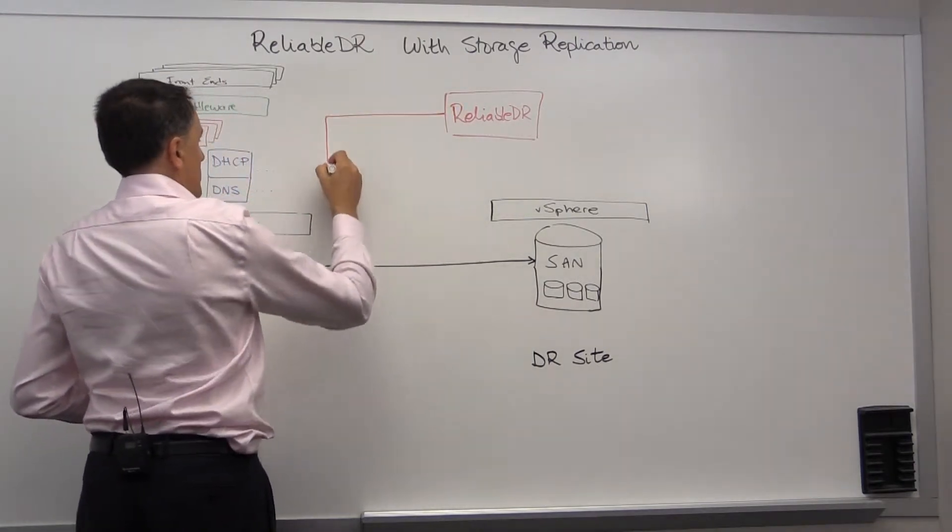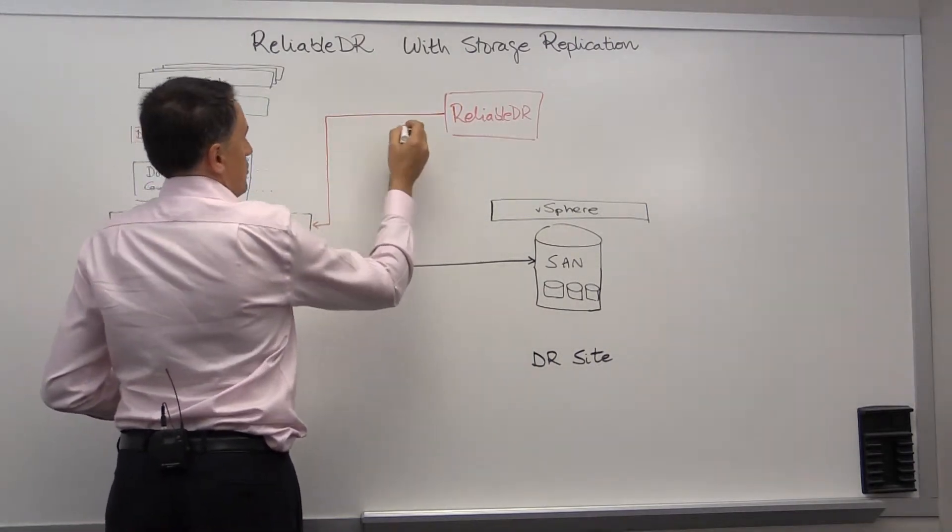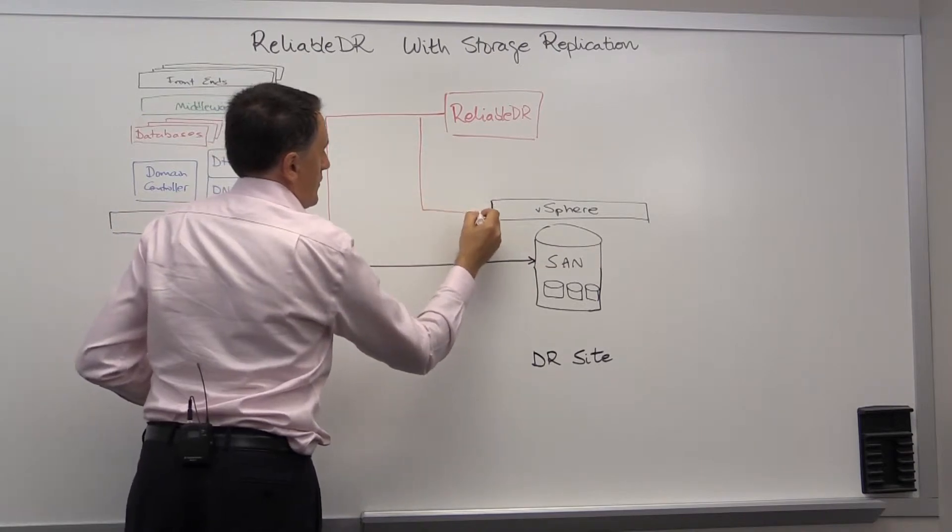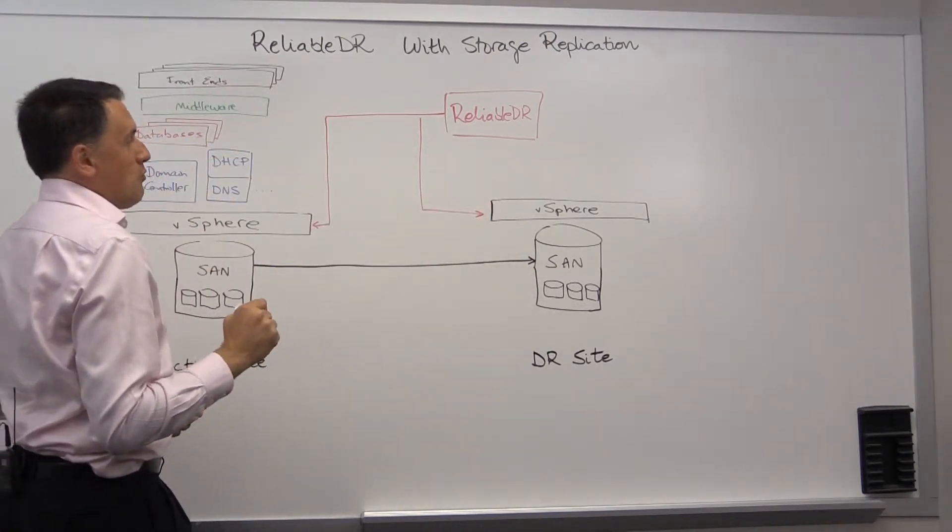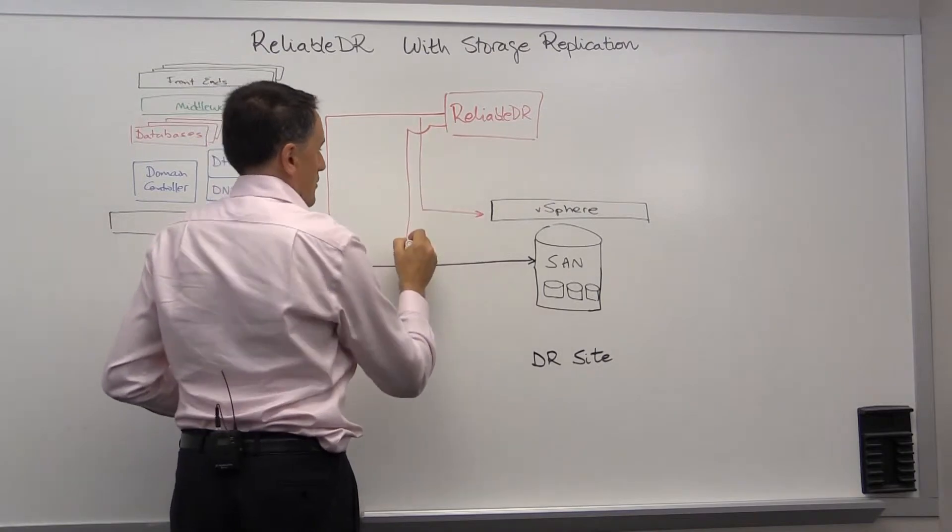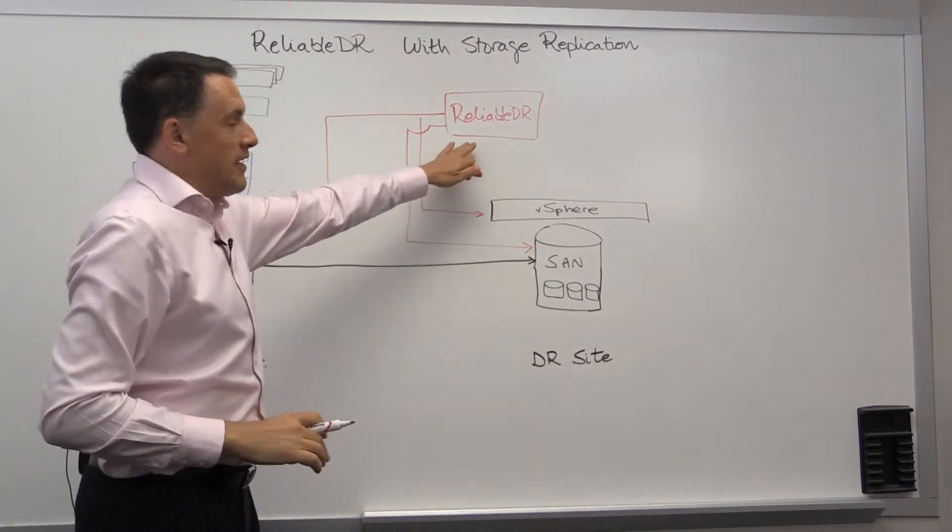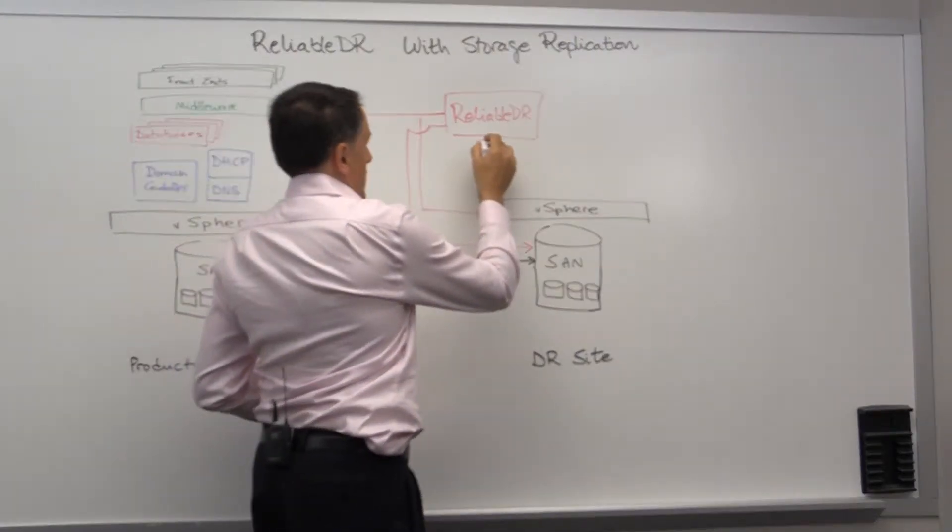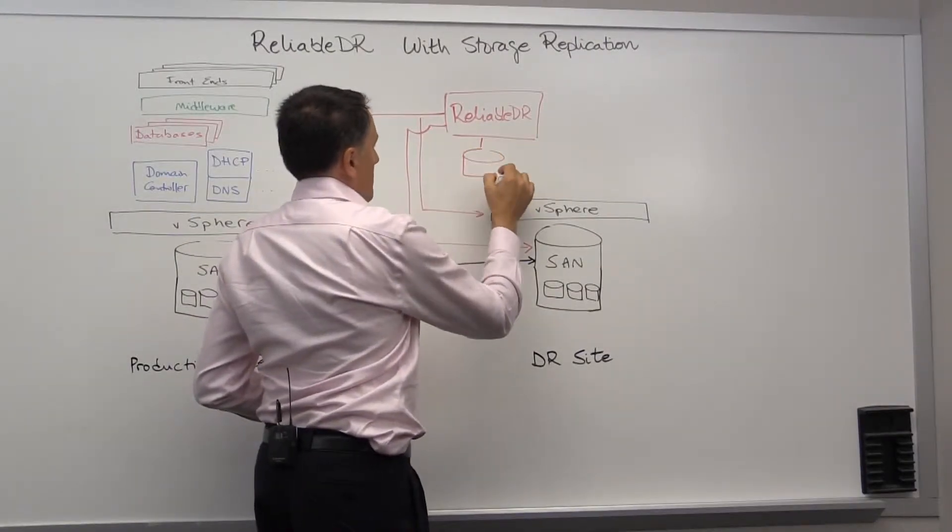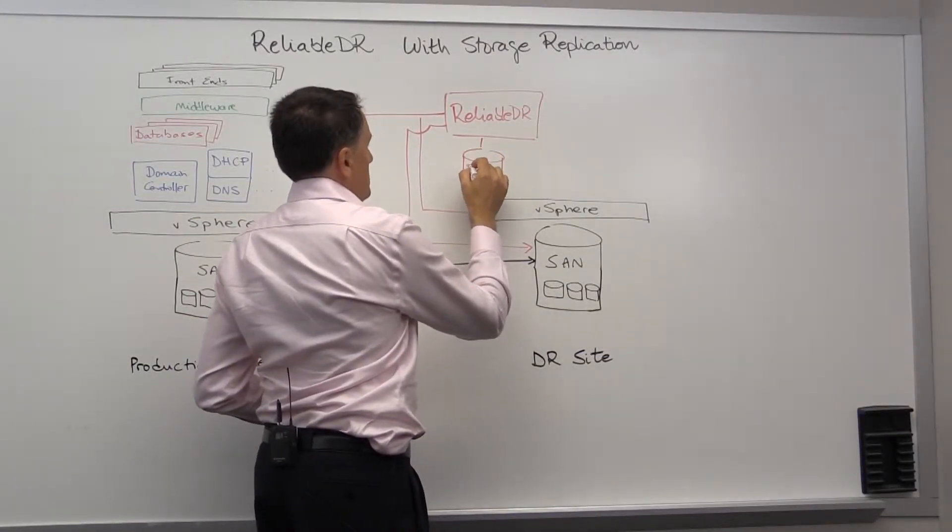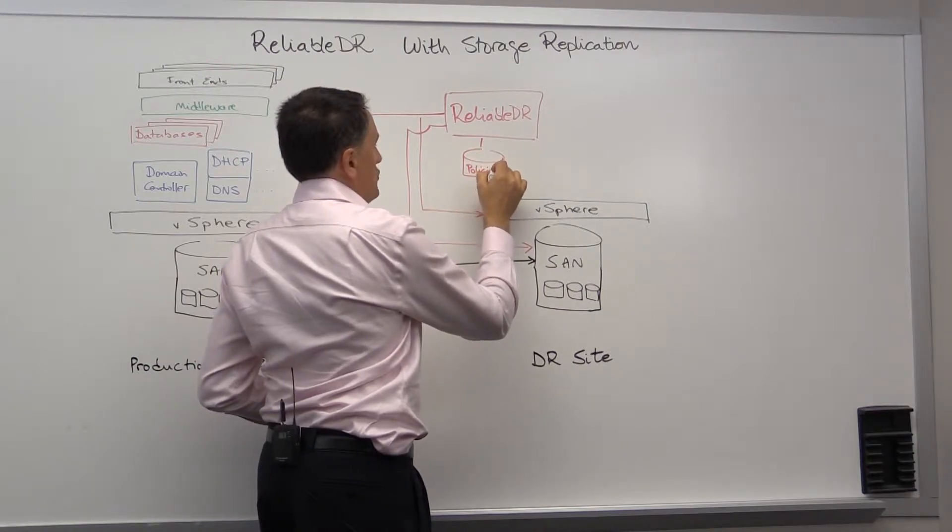Reliable DR orchestrates recovery processes, so it connects to the virtual infrastructure on both sites, as well as to the storage. In Reliable DR, the disaster recovery administrators are able to set up recovery policies, and based on these policies,